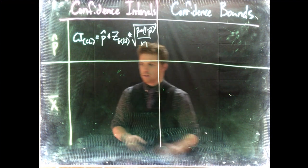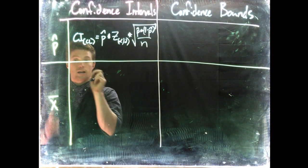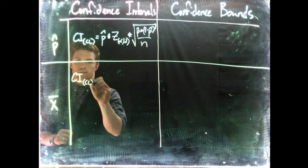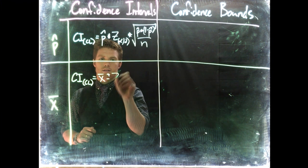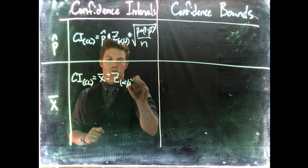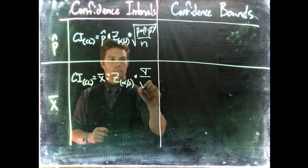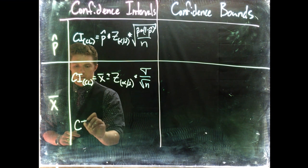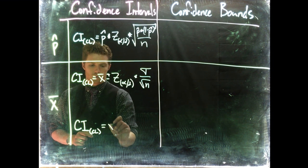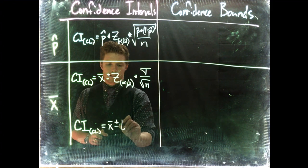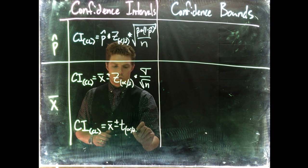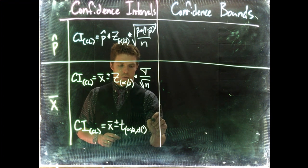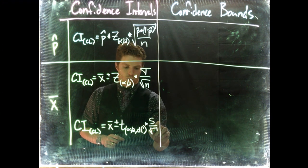Let's look at the confidence interval for the sample means. We've got two different ones. For the first one, the confidence interval at the confidence level equals x-bar plus or minus z(α/2) multiplied by sigma divided by the square root of n. The second one is the confidence interval at the confidence level equals x-bar plus or minus t(α/2, degrees of freedom) multiplied by s divided by the square root of n.